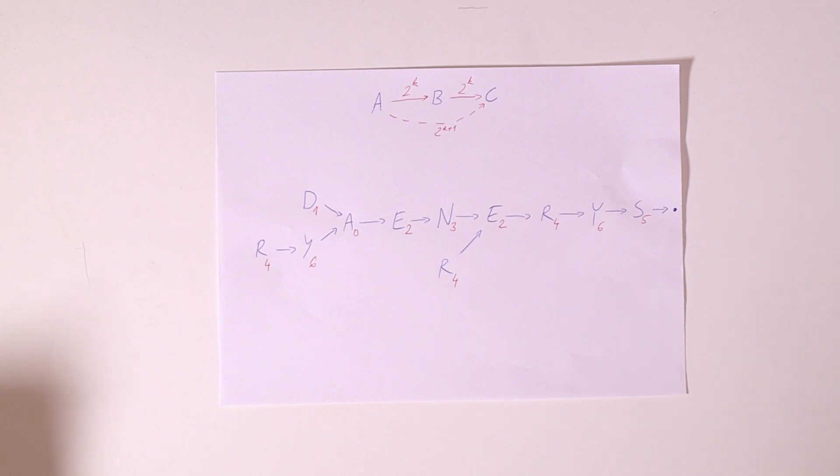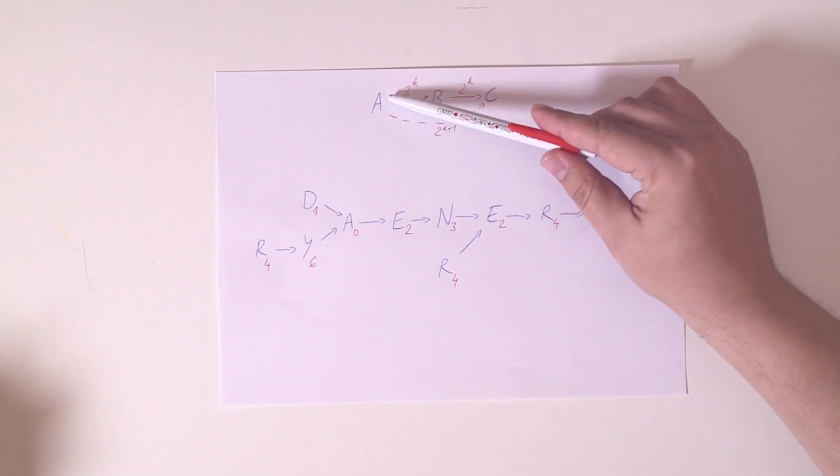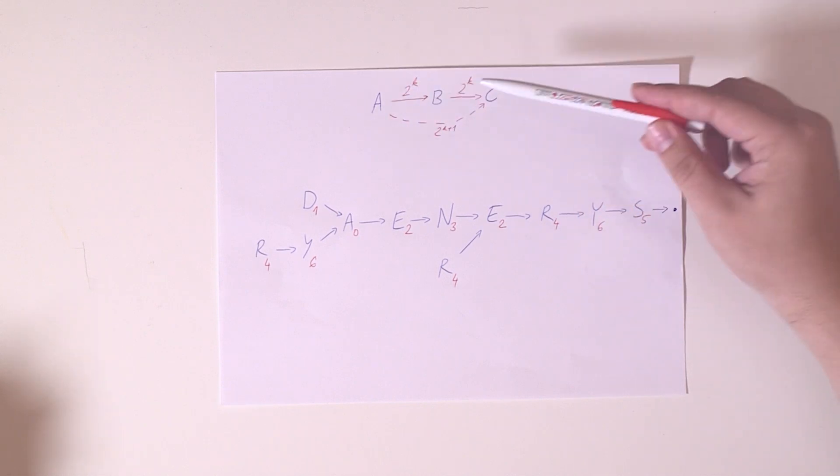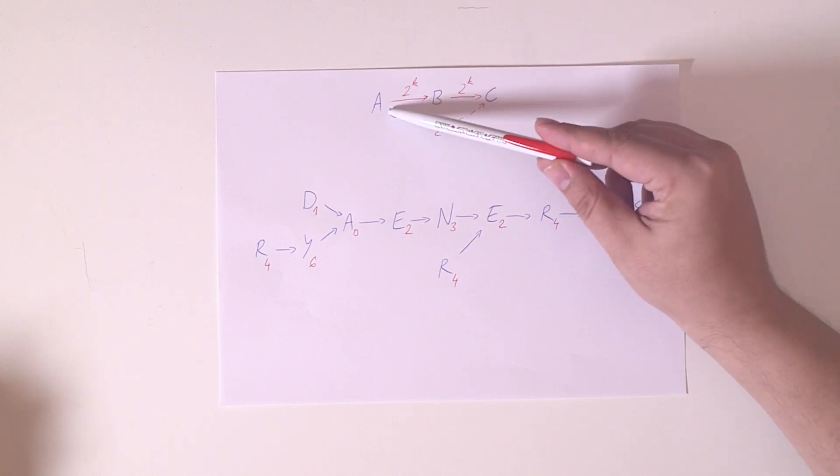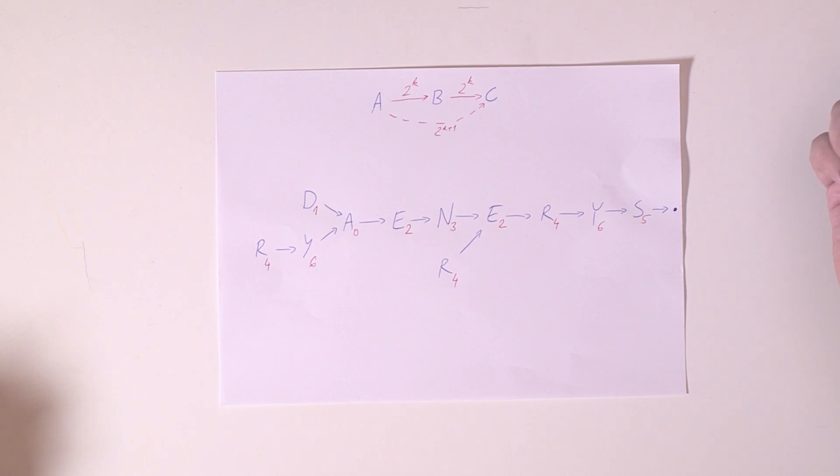Now for this solution the basic technique is sometimes called binary lifting and the general idea is that if we know that in 2 to the k steps you can get from a to b and in 2 to the k steps you can get from b to c then in 2 to k plus 1 steps you can get from a to c. This is a technique commonly used in the design of algorithms, for example when you are building a suffix array.